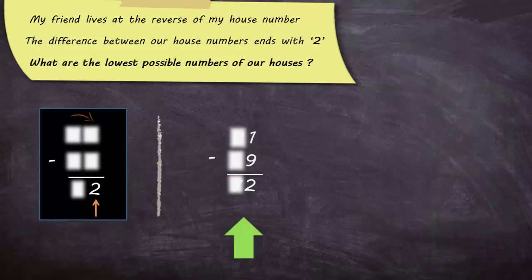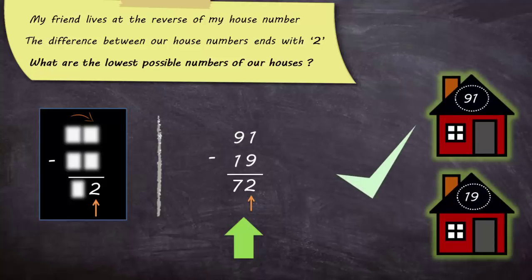Let's check the final candidate. The house numbers are reversed. So, the numbers should be 91 and 19. The difference gives a number that ends with 2. So, the house numbers are 91 and 19.